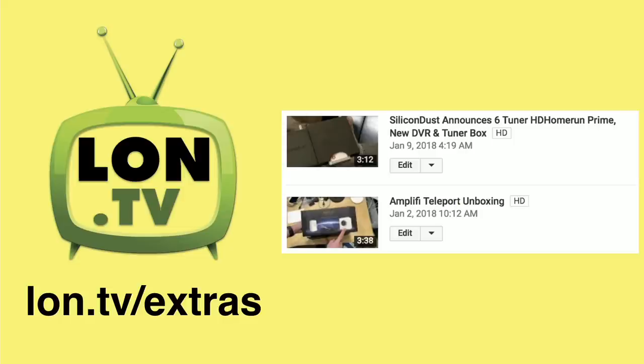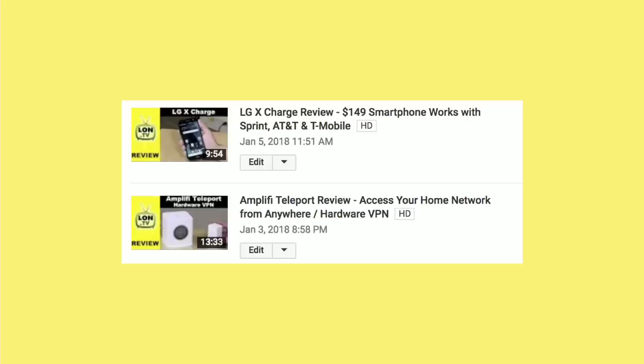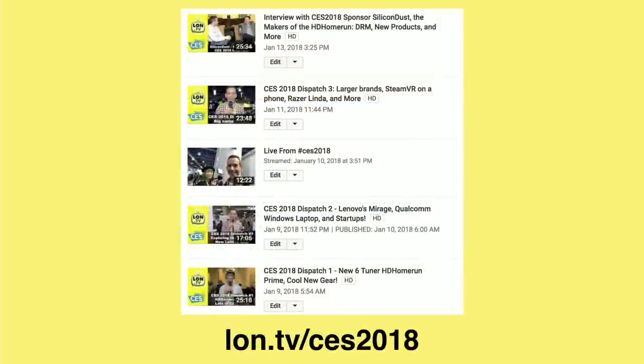So let's move on to what has been posted on the channel since I left. On the extras channel, we had a preview of the new 6Tuner HD Home Run Prime, as well as the unboxing of the Amplify Teleport. On the main channel before I left, we had a review of the LG X Charge, which is a low-cost smartphone for three different carriers here in the United States being offered by Amazon. We also had a review of that Amplify Teleport, which is a hardware VPN that allows you to tunnel back to your home network securely just by plugging this thing into the wall. Pretty cool product, got a lot of potential, and it's very simple to get working.